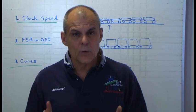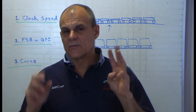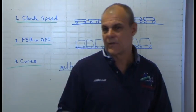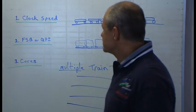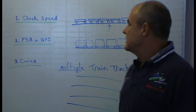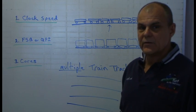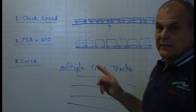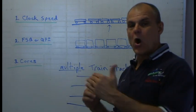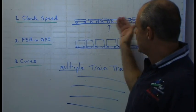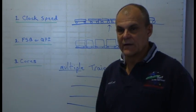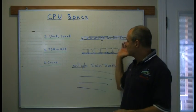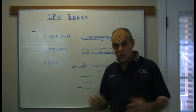It all comes down to how strong and how powerful your processor is. There are three specifications I want you to remember today about the CPU. The first one is clock speed. If I made the analogy that your CPU was like a train, then the clock speed would be how many cars per minute are going by — how many cars per unit of time. That's clock speed.